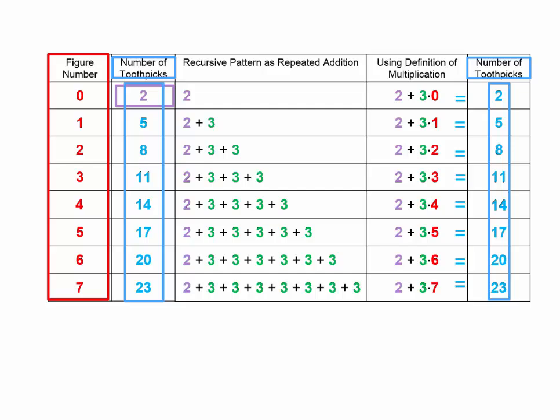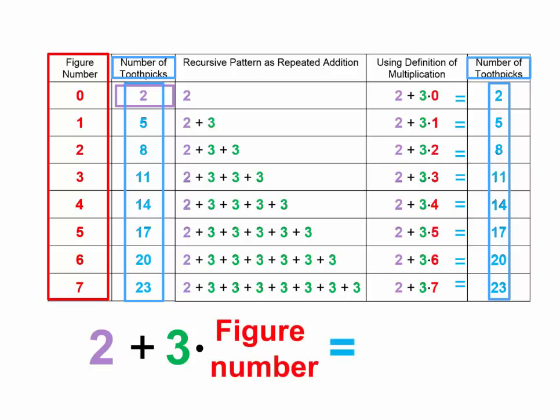Here's the toothpick problem. We see that we start with 2 toothpicks and add 3 more toothpicks each time. The rule for the number of toothpicks must start with 2. Then we need to add a bunch of 3's. The number of 3's we're adding matches the figure number, so we add 3 times the figure number. Therefore, 2 plus 3 times the figure number tells us the number of toothpicks.